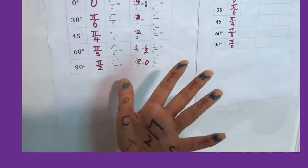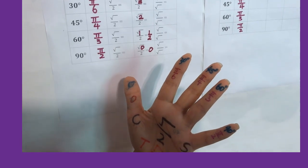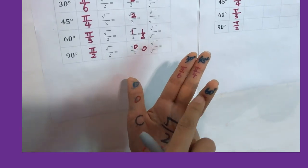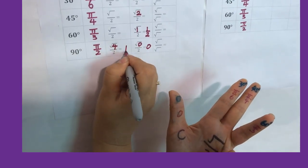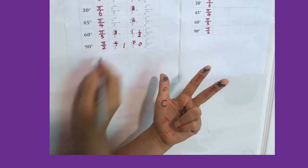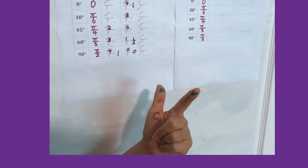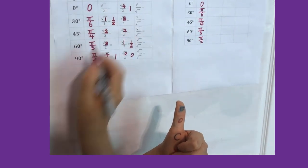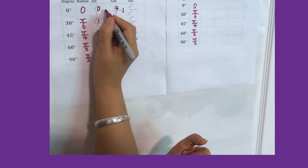Now let's go to sine. For sine, you do it this way — but remember the degree for each finger never changes. Sine 90 equals square root of 4 over 2, that's 1. Sine 60 equals square root of 3 over 2. Sine 45 equals square root of 2 over 2. Sine 30 equals square root of 1 over 2, which means 1 over 2. Sine 0 equals 0.